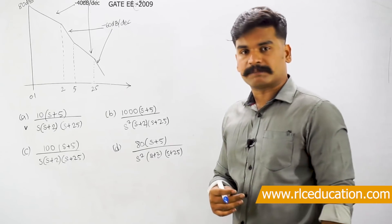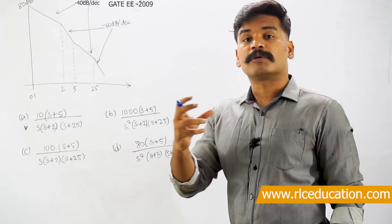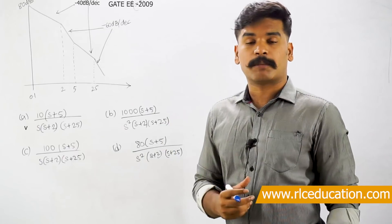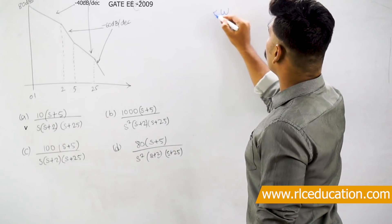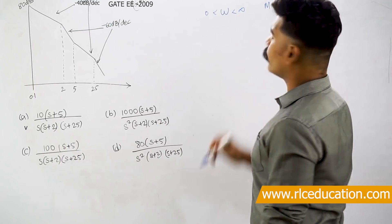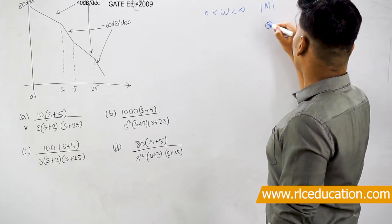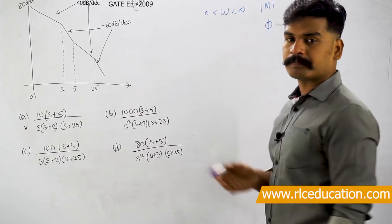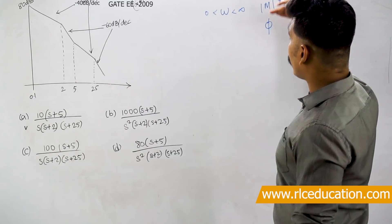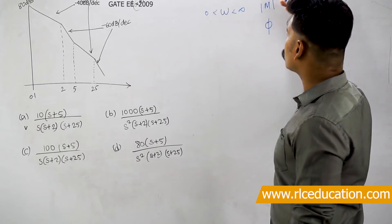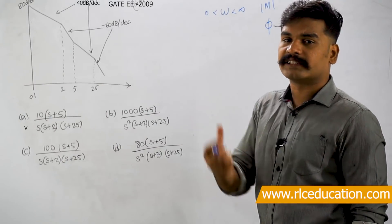Whenever you talk about frequency response, we generally study two responses: the response of the magnitude and the response of the phase angle of the transfer function. In frequency response, the variable parameter is omega, which is frequency. You vary omega from 0 to infinity and check what is the magnitude of that particular transfer function — how the magnitude is varying with respect to frequency. That is the magnitude response. Similarly, you find out how the phase angle is varying as frequency varies from 0 to infinity. Using these values of magnitude and phase plotted against omega, you get a magnitude plot and a phase plot — that is the essence of frequency response analysis.